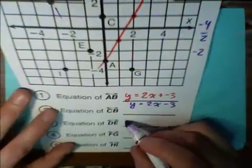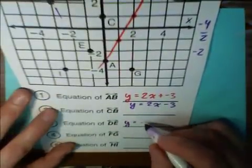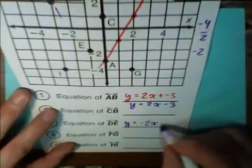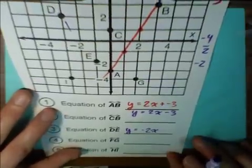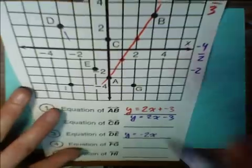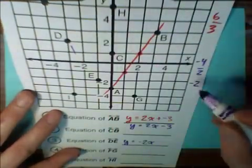So our equation in this case is y equals negative 2x, and we're going to have some kind of a y-intercept. We count in increments of this slope of negative two.